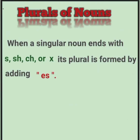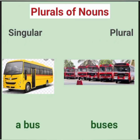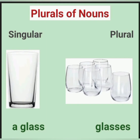When a singular noun ends with S, SH, CH, or X, its plural is formed by adding ES. A bus, buses. A glass, glasses.